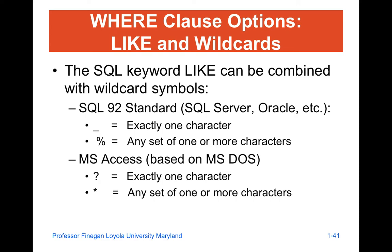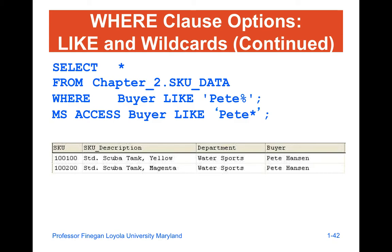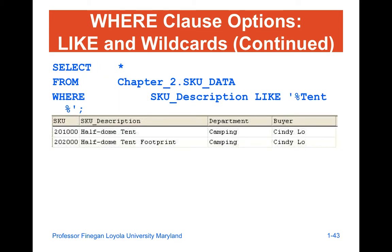To do that, you really need to understand both the WHERE clauses and how to leverage wildcards. We previously covered wildcards using the percentage sign — make sure that the keyword LIKE is combined with the symbols. If I'm looking at the WHERE clause with LIKE and wildcards, this is going to show both where the buyer contains 'Pete' or the buyer's name starts with 'Pete'. The percentage sign will show where the description contains '10' or ends in '10', such as the half-dome tent.